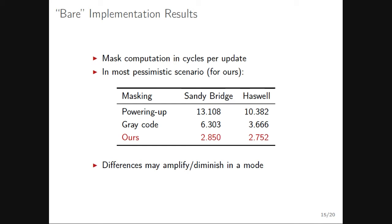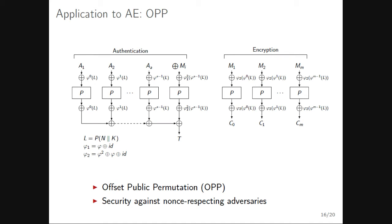Implementation results show cycles per mask update: on Haswell, powering-up masking takes 10 cycles per update for a 1024-bit state, gray code masking takes 3.6 cycles, and our approach takes roughly 2.7 cycles. These numbers should be taken with a grain of salt — in a concrete construction, the block cipher or permutation evaluation dominates and largely hides the masking overhead.